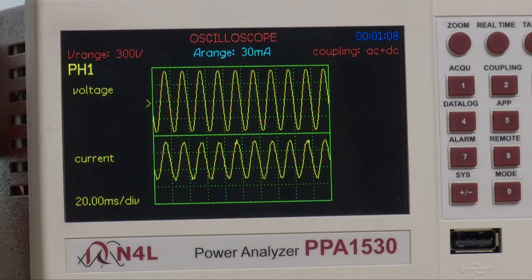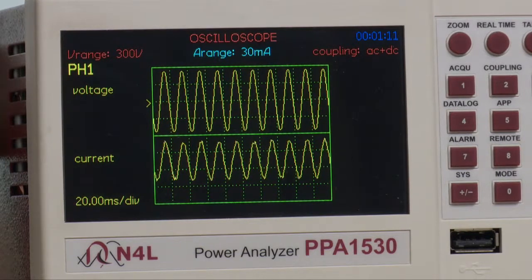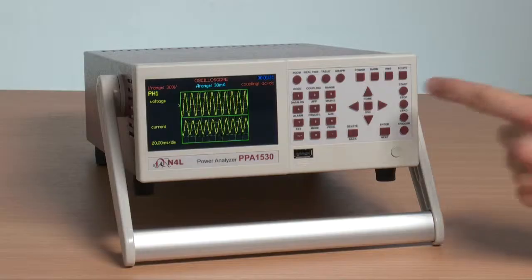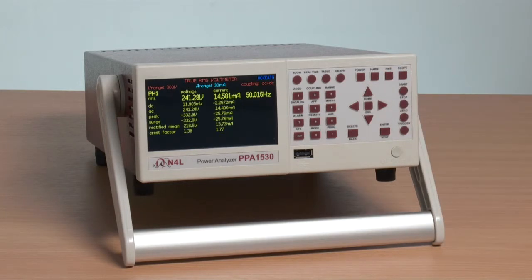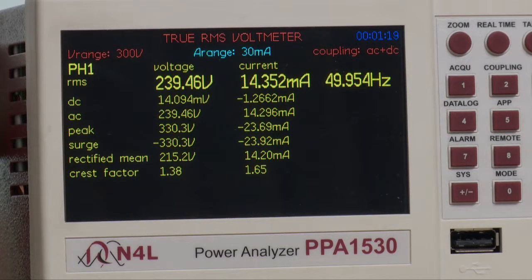If, however, we want to look at harmonics and distortion, we move on to look into different modes. There is an RMS button, which will show all the RMS components, plus the DC, AC, peak, surge, rectified mean, and crest factor of voltage plus current and frequency.